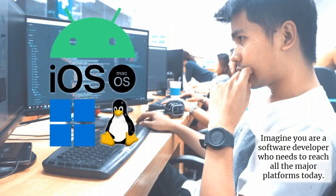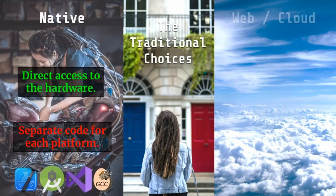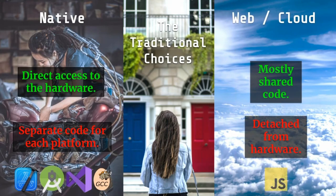To understand what Skia is, imagine you're a software developer that needs to reach all the major platforms — Android, iOS, Linux, Windows, etc. Traditionally there are two choices: the native route, which gives you direct access to the hardware but requires separate code for each platform and often multiple teams. It gives the best user experience but sacrifices developer productivity. The alternative — web or cloud — gives you code reuse across platforms but detaches you from the hardware.